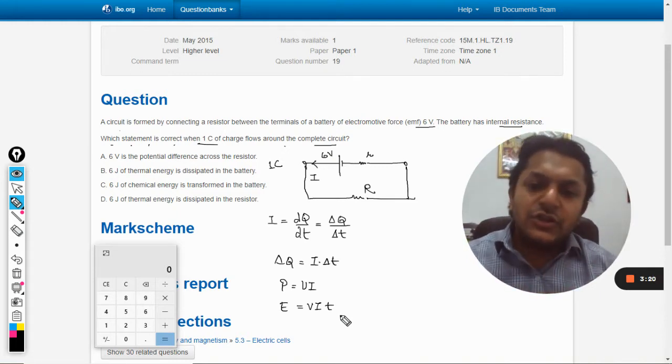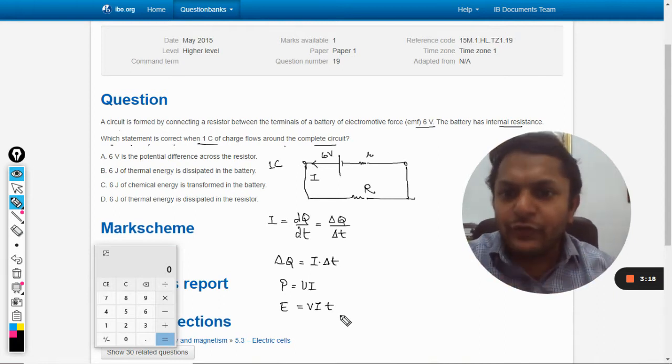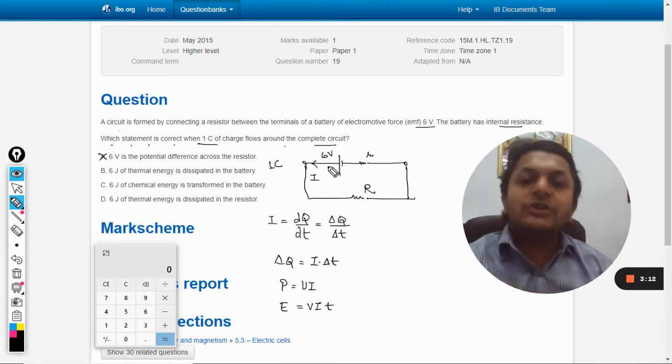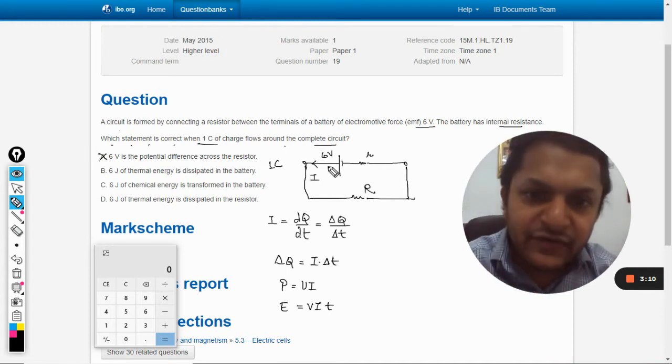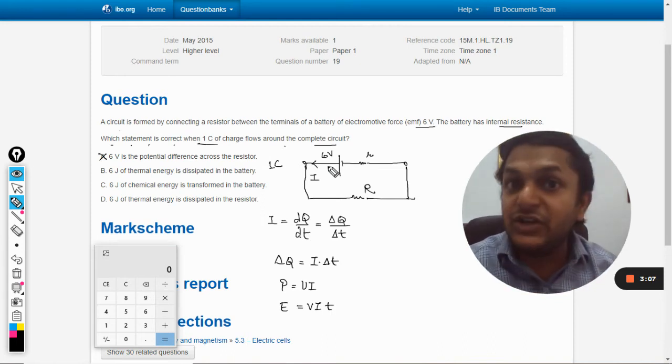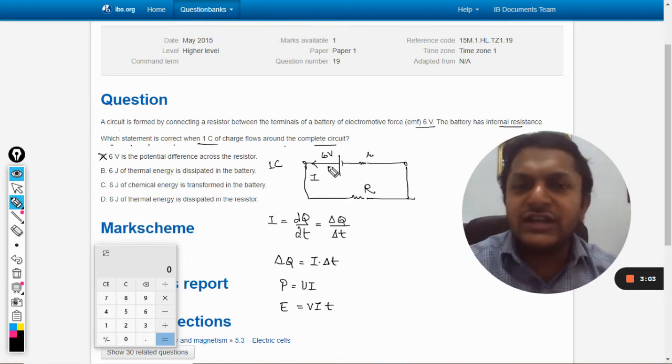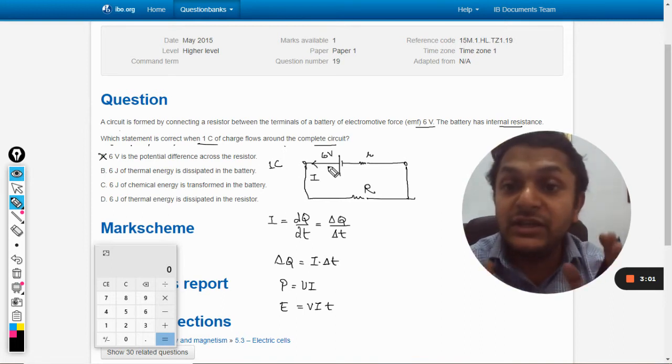So now we can use this formula. Let us go for the options now. Six volt is the potential difference across the resistor - absolutely wrong, because six volt is the total EMF which will be shared as the potential difference between two different resistors. So the potential difference across the external resistance will definitely be lesser than six. So option A is wrong.